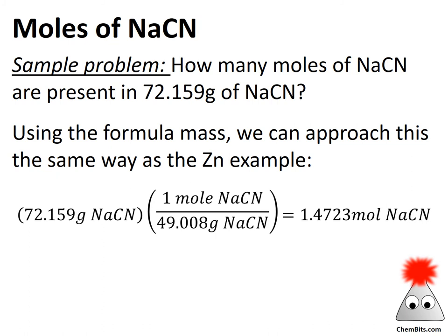Now we can look at the same type of sample problem: How many moles of sodium cyanide are present in 72.159 grams of sodium cyanide? The formula mass is used exactly the same way as atomic mass for atomic substances. We have 72.159 grams of sodium cyanide times one mole of sodium cyanide per 49.008 grams. Let's do a quick prediction — we have more grams than are in one mole, so we should get a number bigger than one. Sure enough: 1.4723 moles of sodium cyanide.